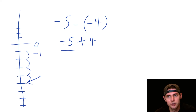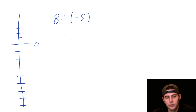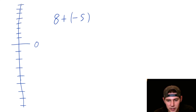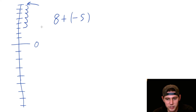So the answer is negative one. Next: eight plus negative five. We start at eight and then plus negative five means we're going down five. Starting right here at eight and going down five, that puts us down to three. So the answer is three.